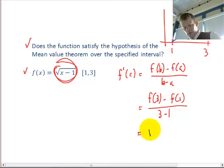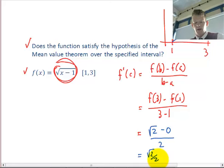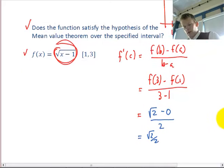So, f of 3 is going to be root 2, f of 1 is going to be 0. Am I going to get a value of root 2 over 2 for somewhere in this interval, if I take the derivative? Can I solve for that point?